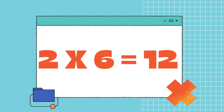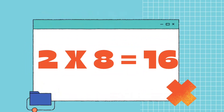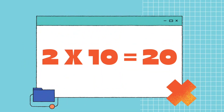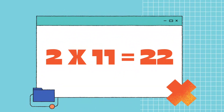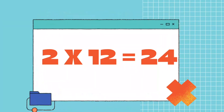2 times 6 equals 12. 2 times 7 equals 14. 2 times 8 equals 16. 2 times 9 equals 18. 2 times 10 equals 20. 2 times 11 equals 22. 2 times 12 equals 24.